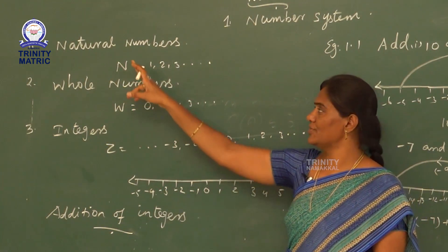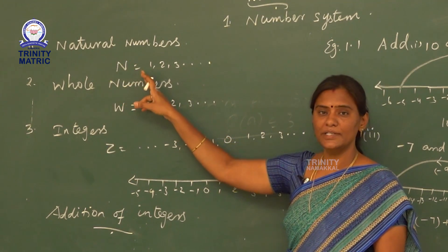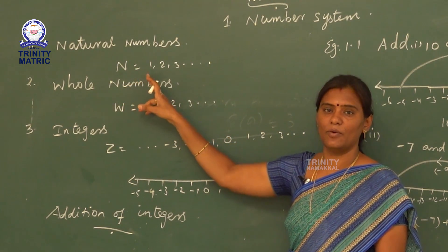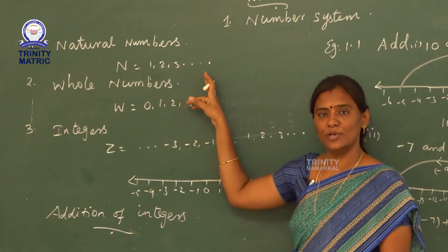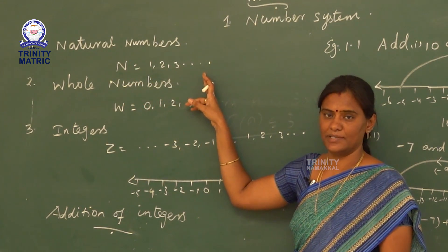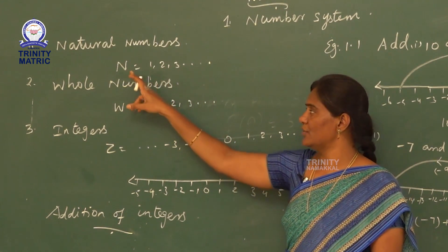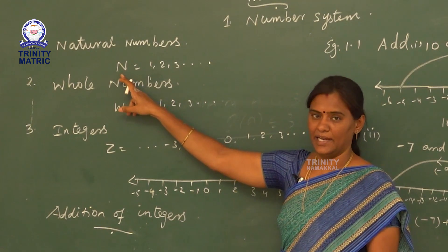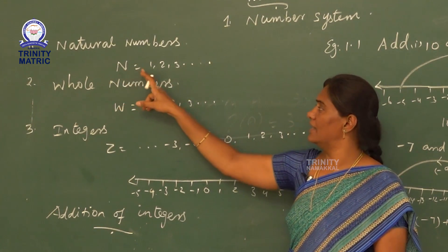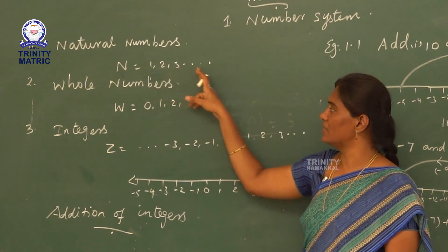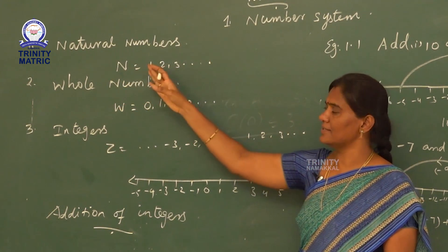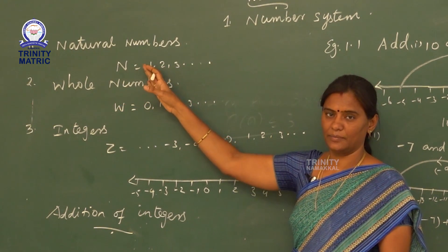A natural number is nothing but a number starting from 1, known as natural numbers. It is denoted by capital N: 1, 2, 3, etc. This is natural number.